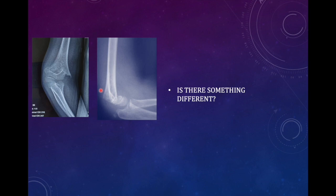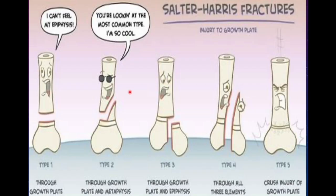This radiograph shows a different presentation: on the AP view there is lateral migration, and on the lateral view the distal fragment is going anteriorly — this is a flexion type of supracondylar fracture. When dealing with pediatric distal humerus fractures, you need to be aware of the Salter-Harris fracture classification. It goes from simple to complex — just remember that principle without any mnemonic.